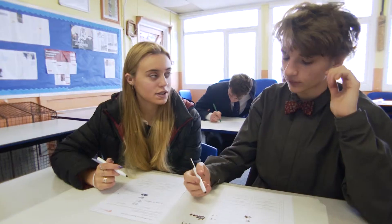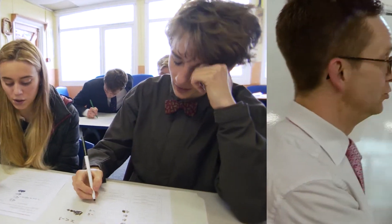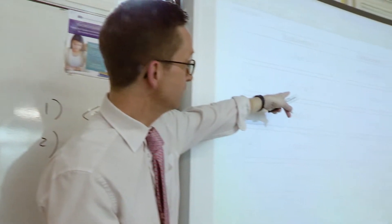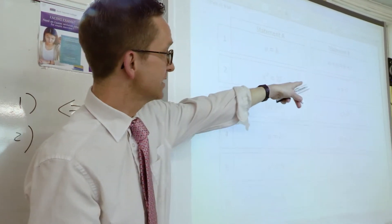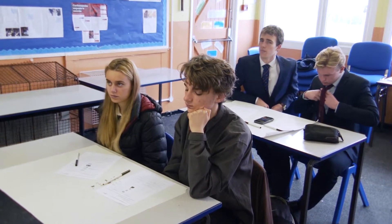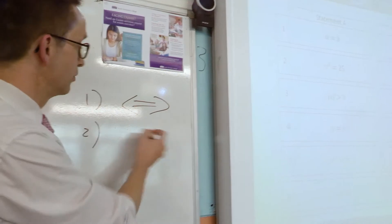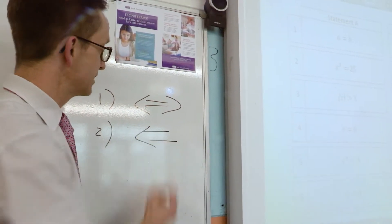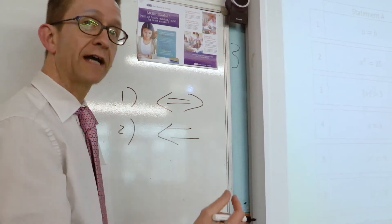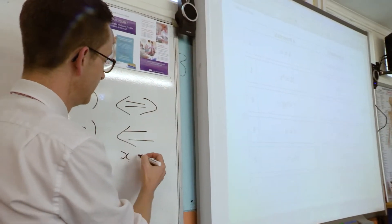A student considers the statements 'x squared is 25' and 'x is 5.' The teacher asks which direction the implication goes — does B imply A, or is A implied by B? When asked if it goes both ways, a student offers the counter-example: x could be minus 5.